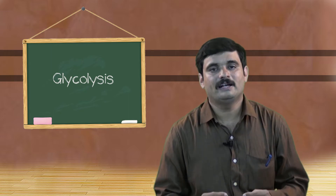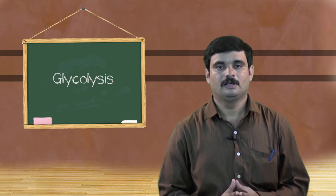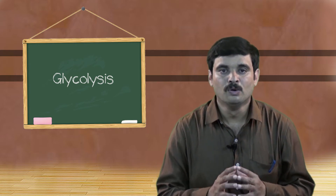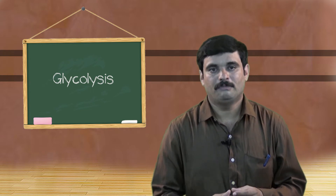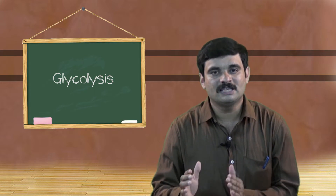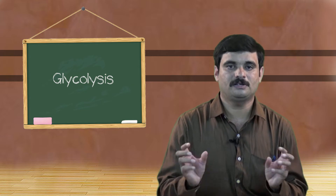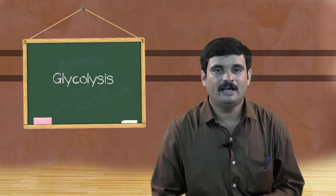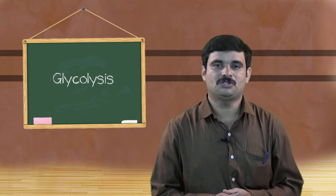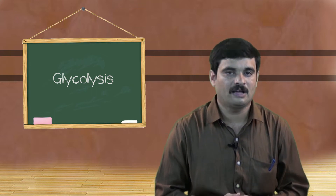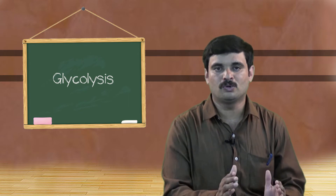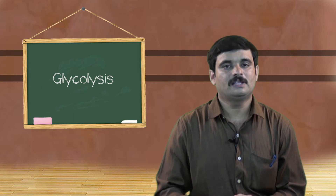The first reaction of glycolysis begins with glucose undergoing phosphorylation by the addition of ATP, converting it into glucose 6-phosphate. This reaction is mediated by an enzyme known as hexokinase, and it is an irreversible reaction that marks the beginning of glycolysis.